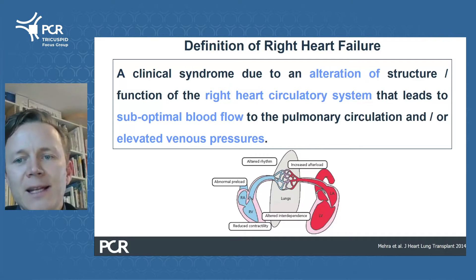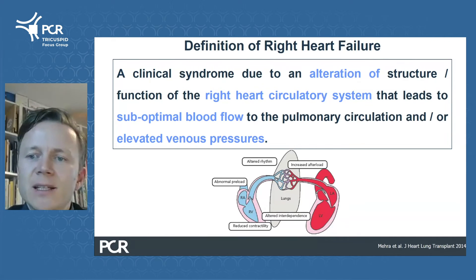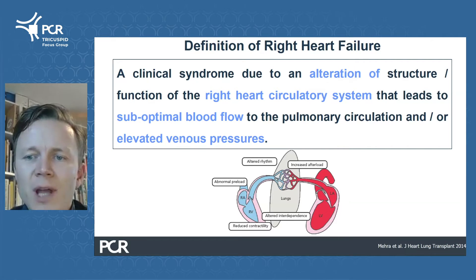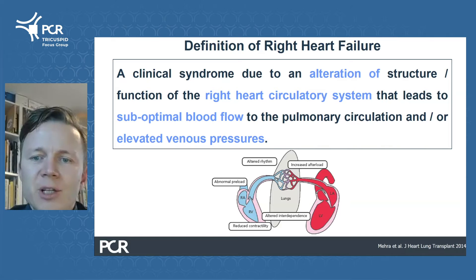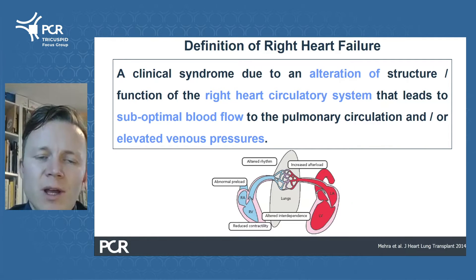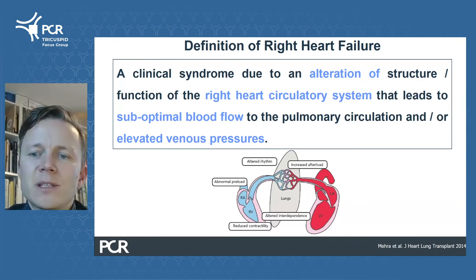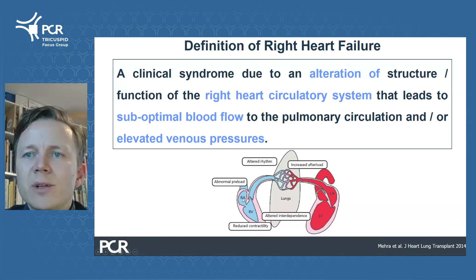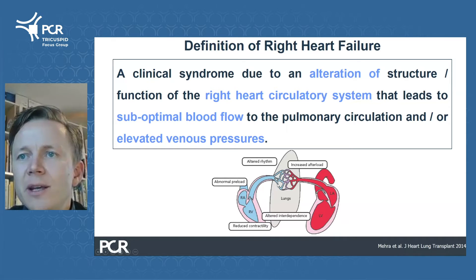To start, let's define right heart failure as a structural or functional alteration of the right heart circulatory system leading to suboptimal cardiac output and/or elevated filling pressures. It's important to note that this is not synonymous with right ventricular failure, as it encompasses the entire circulatory system — including the venous system, the right atrial system, and the pulmonary vasculature up to the capillaries.